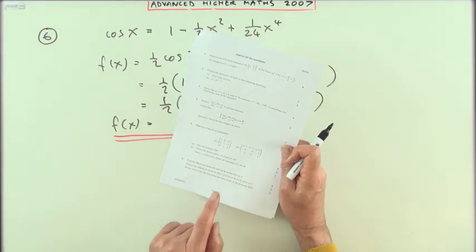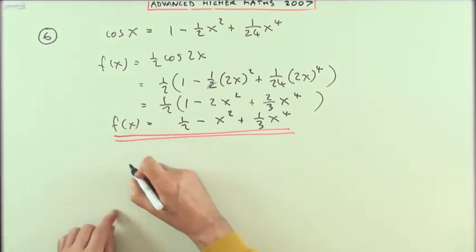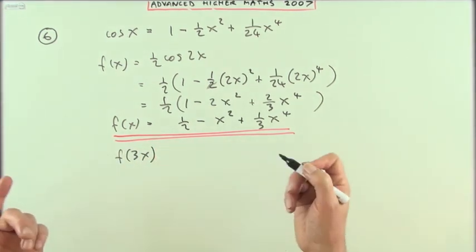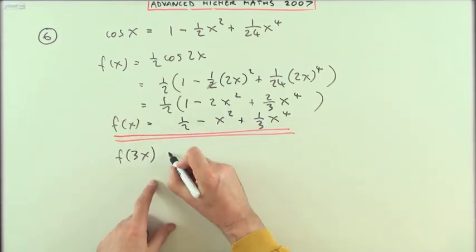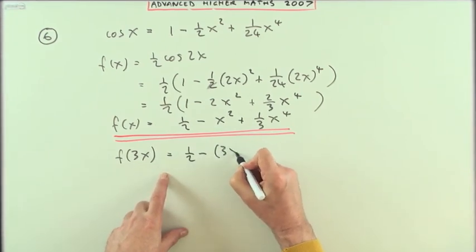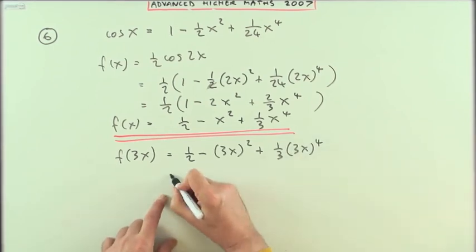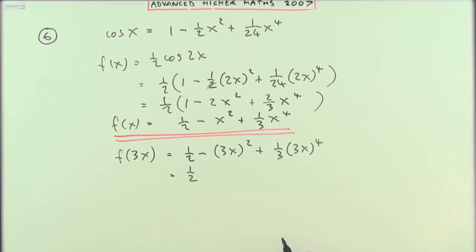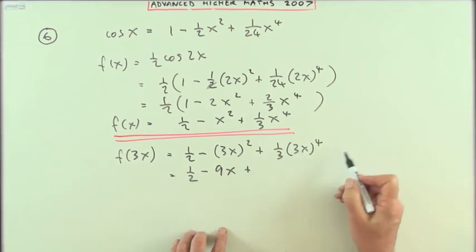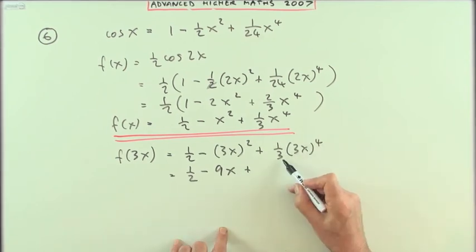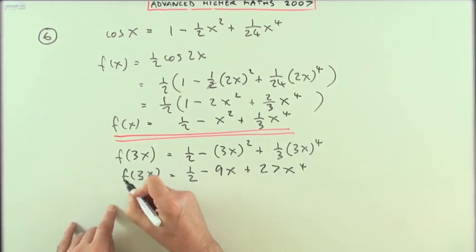Last part says hence write down the first three non-zero terms of f of 3x. This being the real f, I want f of 3x. That just means once again I take this expression here and I replace each x with a 3x. So f of 3x will be a half minus the 3x squared plus a third of the 3x to the power of 4. And luckily I've got three terms because I wanted the first three. So that's a half minus 3 squared is 9, so that's 9x squared. Plus a third of, well, 3 to the 4 divided by 3 is only 3 to the 3, so that must be 27x to the 4 for f of 3x.